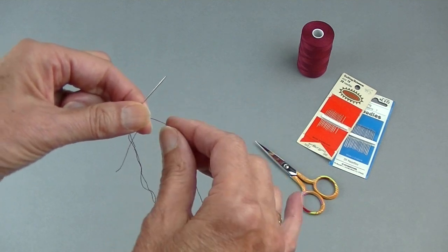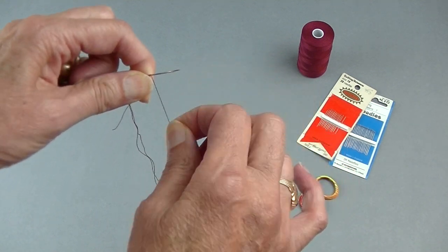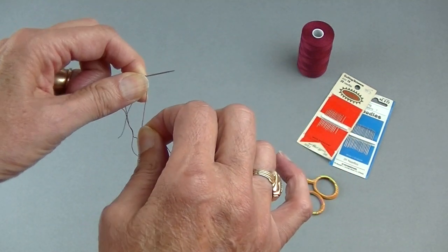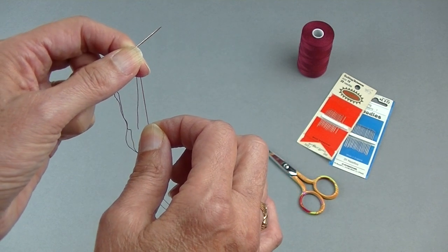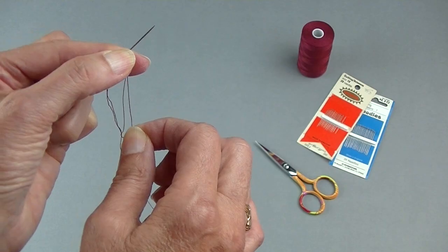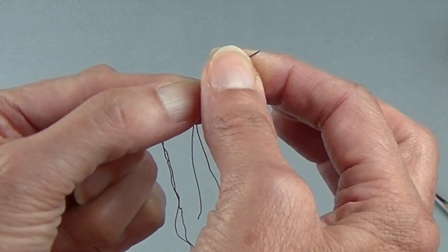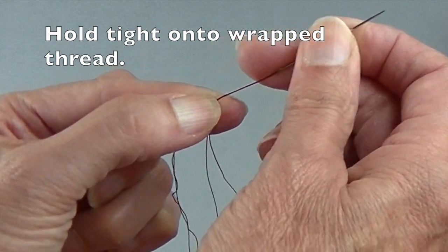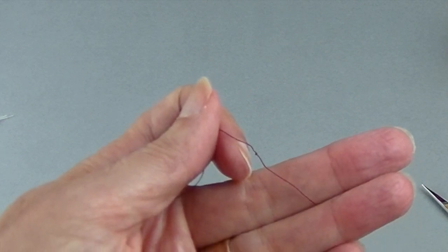Now let me pull that needle up a little. I'm going to wrap the thread one, two, three times around. If you embroider you might recognize this as a French knot. So you hold this where you wrap between your thumb and your first finger and you start pulling your needle through. And there's your knot.